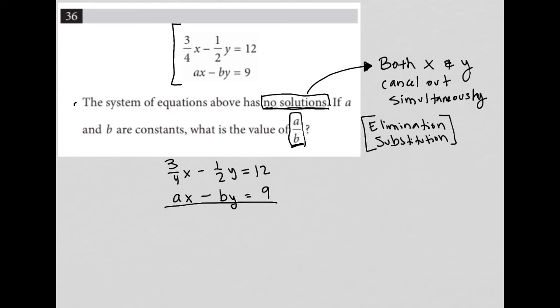Because I've been told that the system has no solutions, I already know what I want a and b to be. I need a to equal negative three-fourths, because that's the only way that when I add this bottom equation to the top equation, the x terms cross out. And I need b to equal negative one-half.